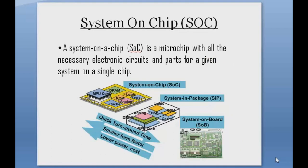The next thing is the system on chip. By definition, it is a microchip with all the necessary electronic circuits and parts for a given system on a single chip — like those made by Intel or Qualcomm. There are three packaging types: system on chip, system in package, and system on board, where the system is built entirely on a board.